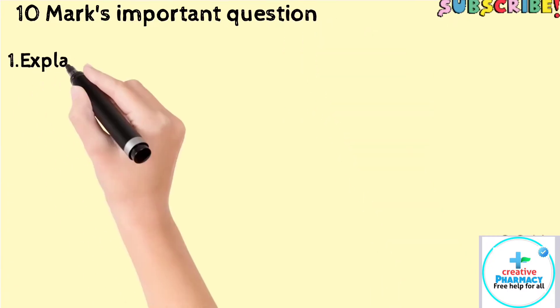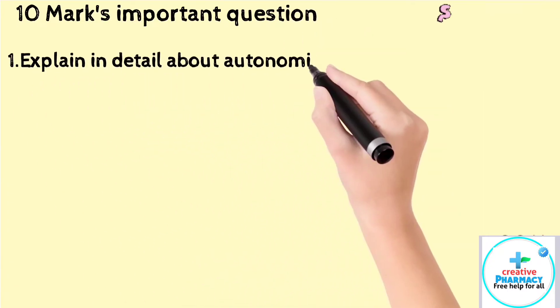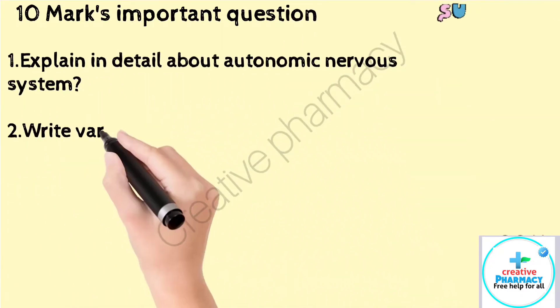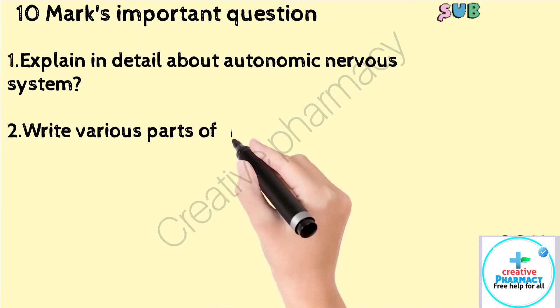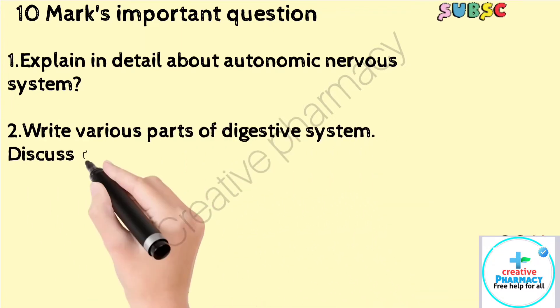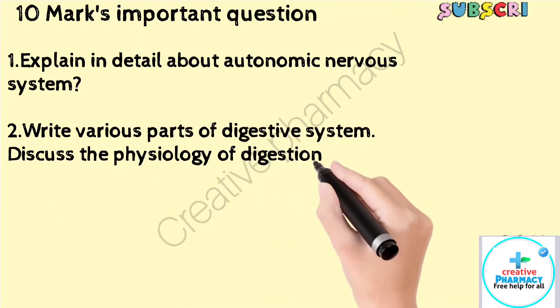Question 1: Explain in detail about the autonomic nervous system. Question 2: Write various parts of the digestive system and discuss the physiology of digestion in detail.